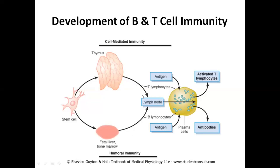B and T lymphocytes are then directed toward the lymphoid organs, where they are lodged in a dormant, inactive form. For the release of B and T lymphocytes, we require antigen exposure. Whenever an antigen is exposed to the lymphoid organ, the B and T lymphocyte clones present in the lymphoid organs get activated and ultimately form activated B and T lymphocytes. B lymphocytes will ultimately form antibodies.